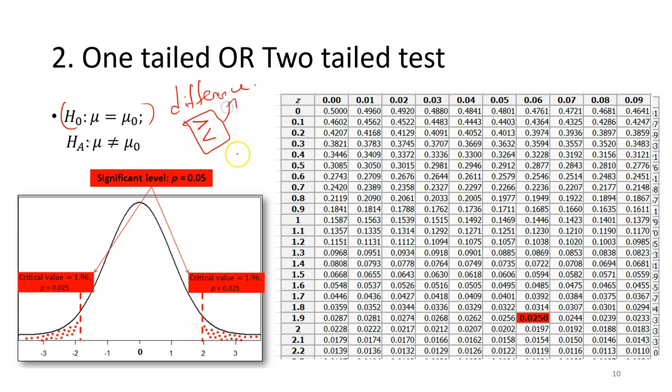When we calculate the sample mean and obtain the calculated z-score, we will reject the null hypothesis whether the z-value falls on either side of the standard normal curve.